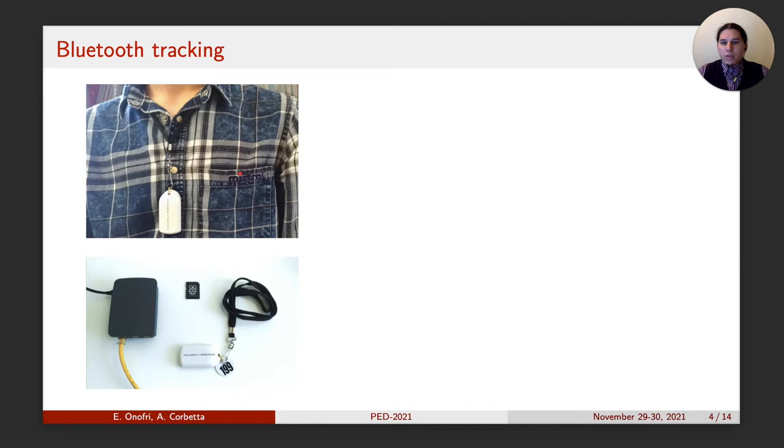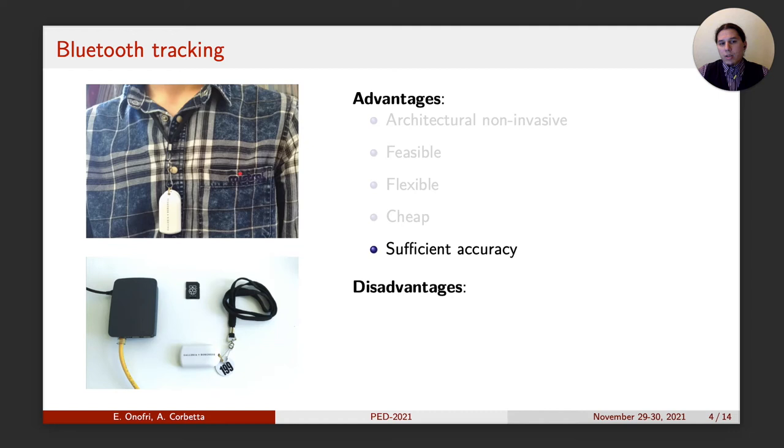But why we choose Bluetooth tracking? Well, the main constraint in historical buildings, like those where many museums are settled, makes it impossible to install bulky machines like optical tracking systems. Bluetooth tracking antennas, on the other hand, can be obtained even with little single board computers, as those depicted in the picture, and it is therefore suitable if no major intervention can be carried out. We can then list the main advantages of these technologies. We already said that Bluetooth is simple to install. The infrastructure offers feasibility and flexibility as well, being freely rearrangeable even on the fly. And it is of course much cheaper than many other solutions while providing sufficient accuracy for room-scale tracking.